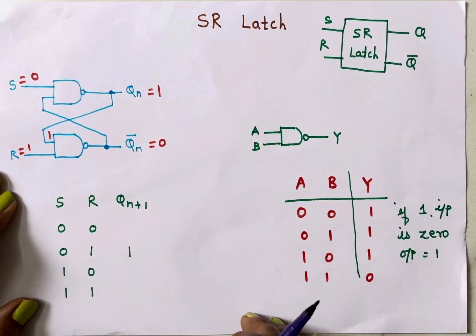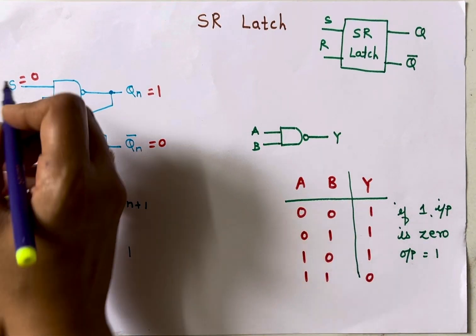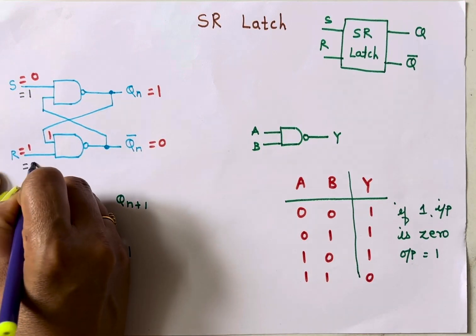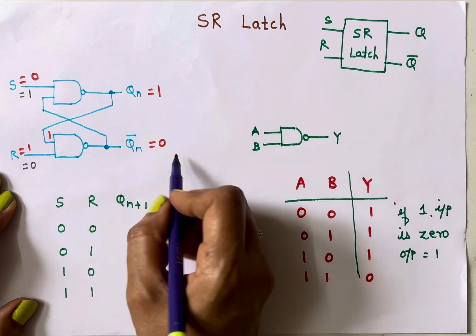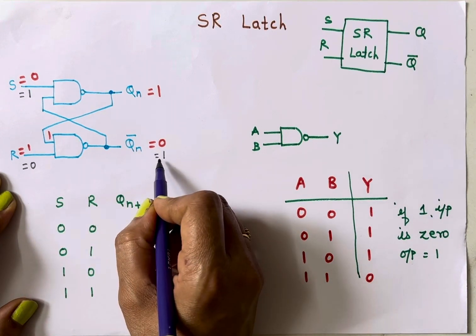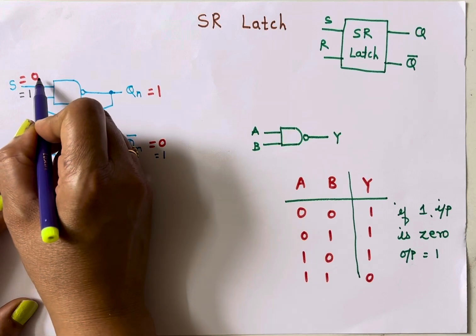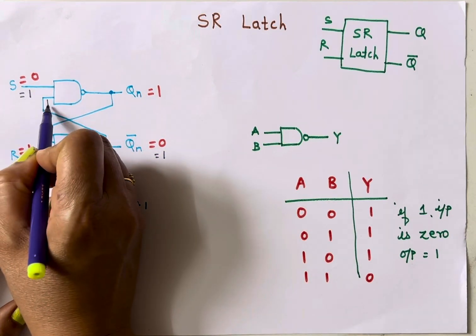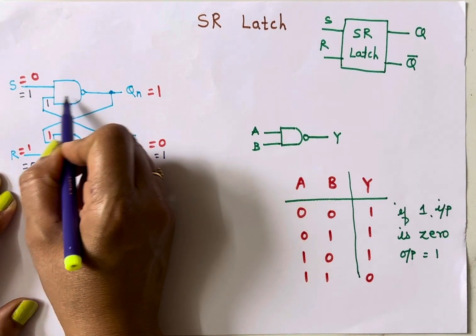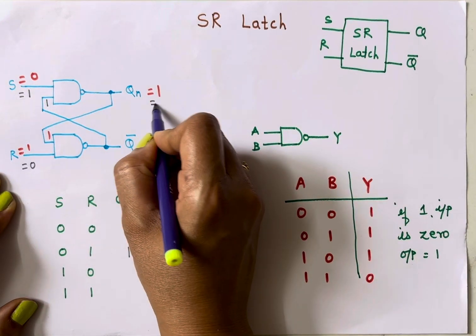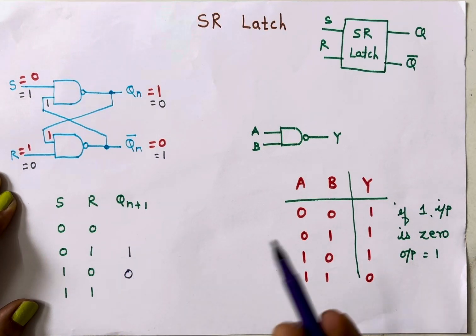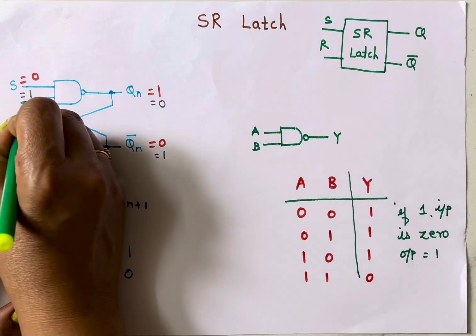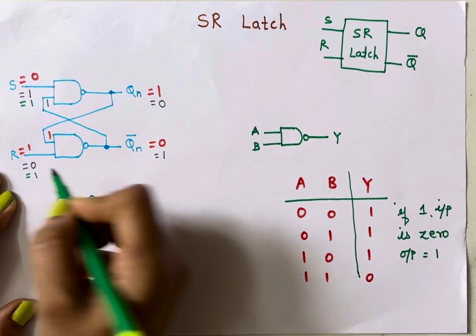Now let's verify the S=1, R=0 condition. Again the same rule applies: when one input is zero, output is one. So Q-bar becomes one. This one feeds into the first NAND gate where both inputs are now one, so Q output is zero. For S=1, R=0, Q(n+1) = 0.